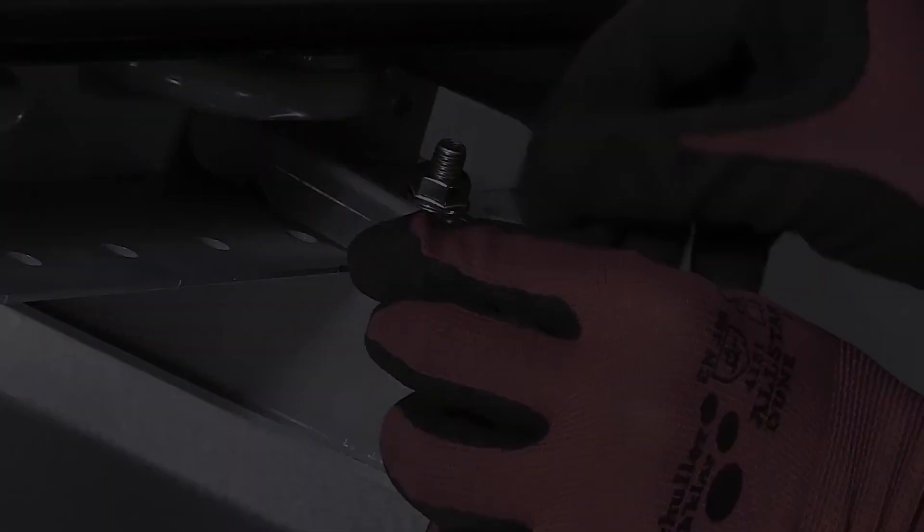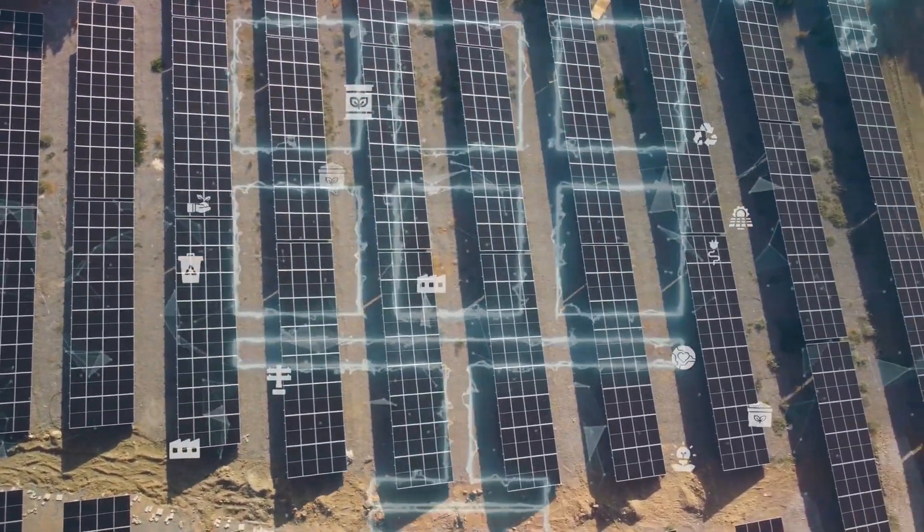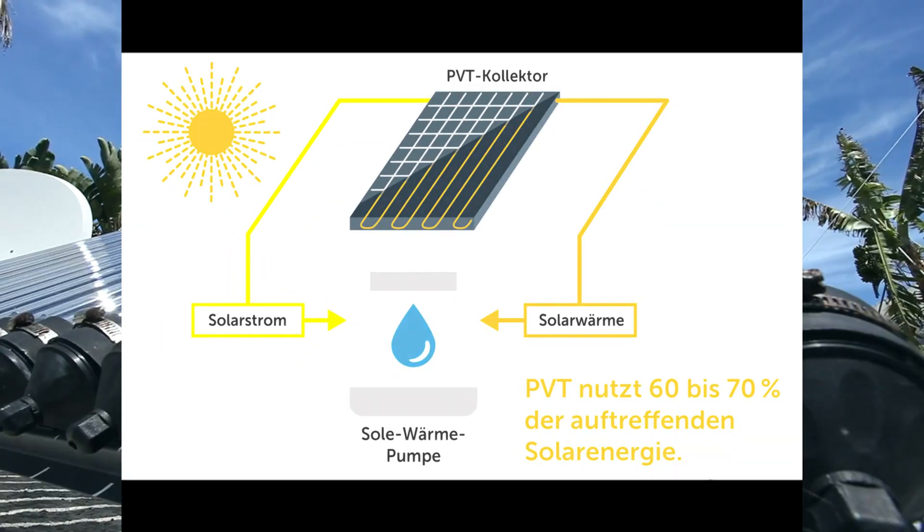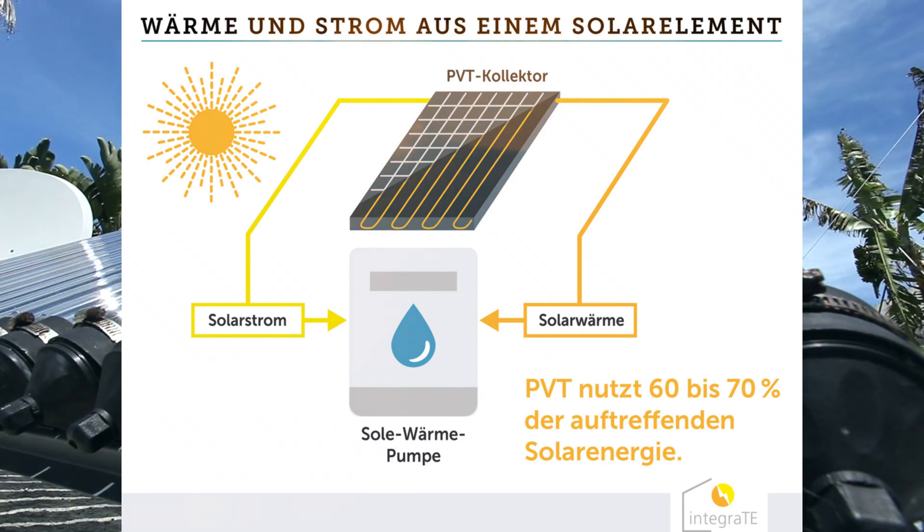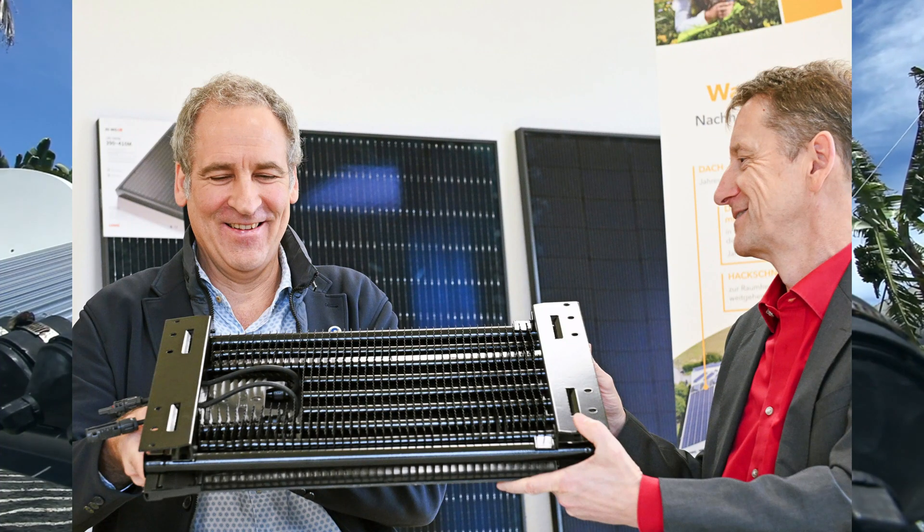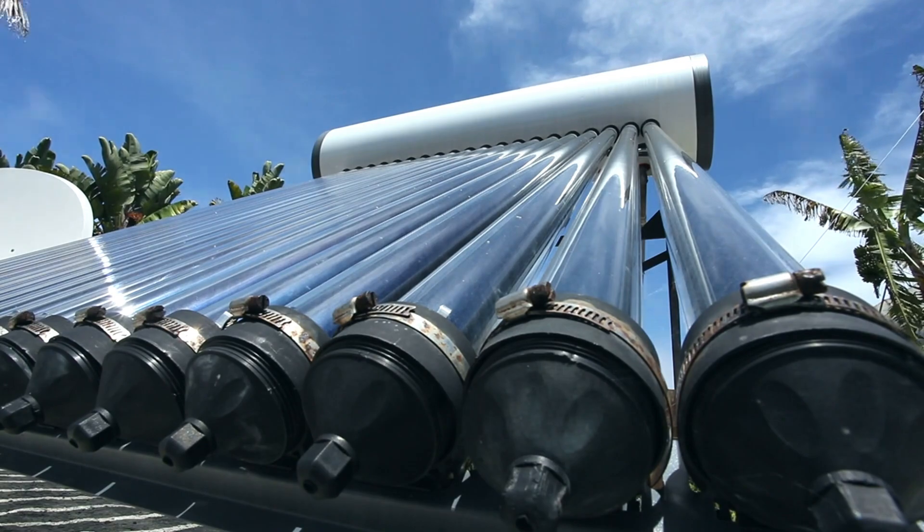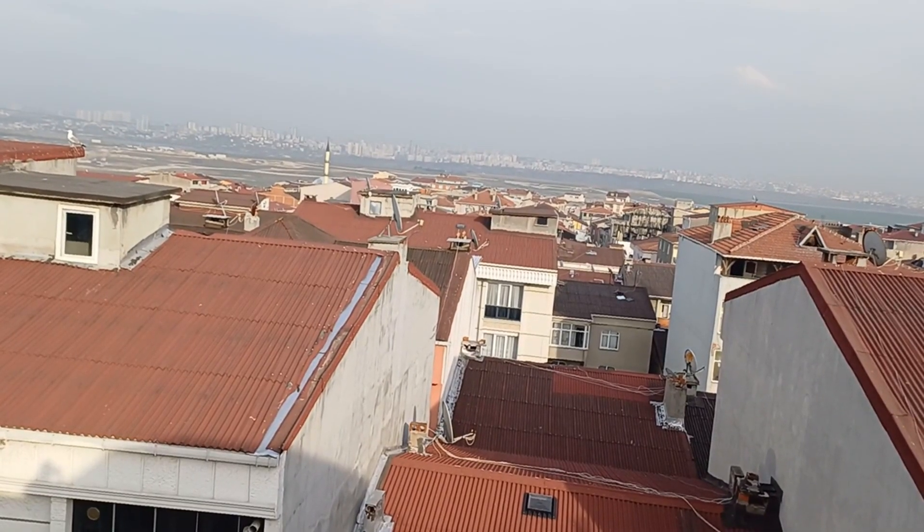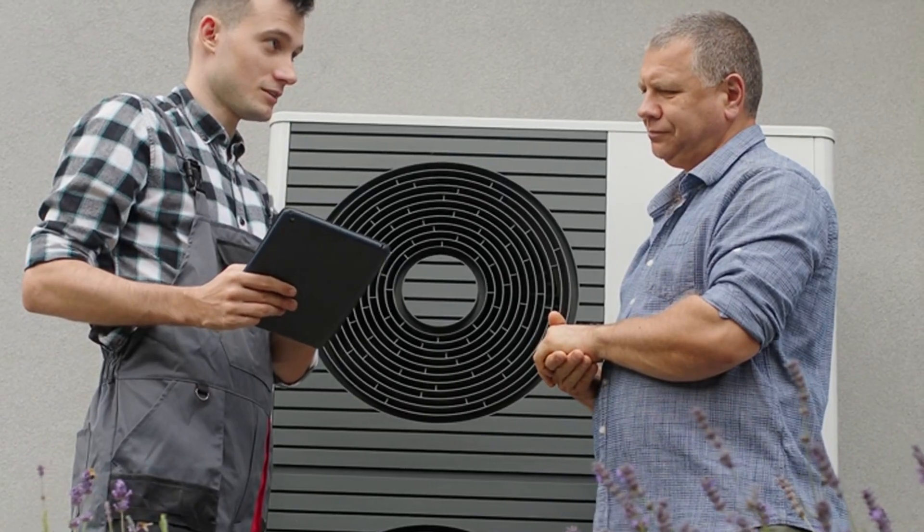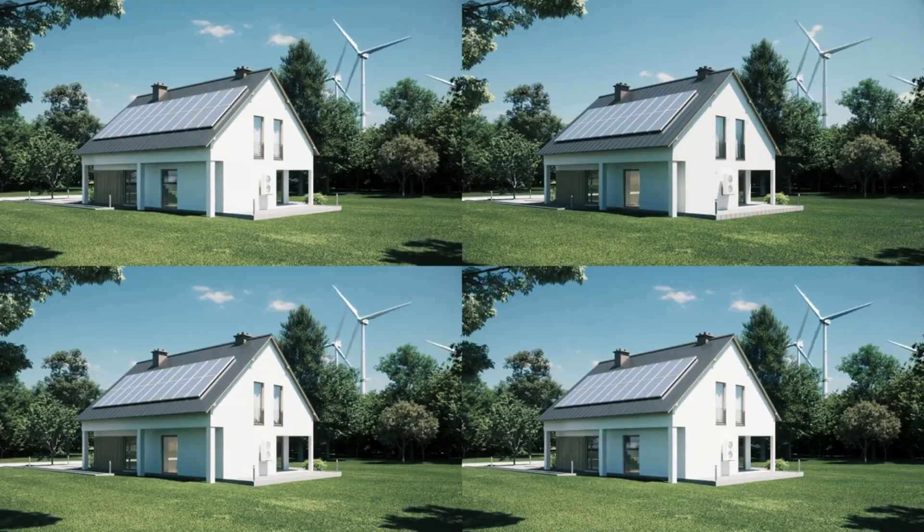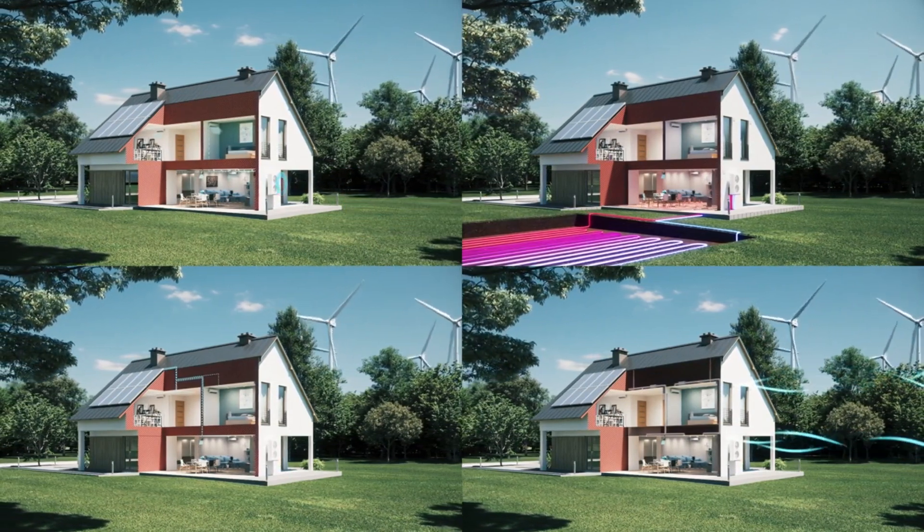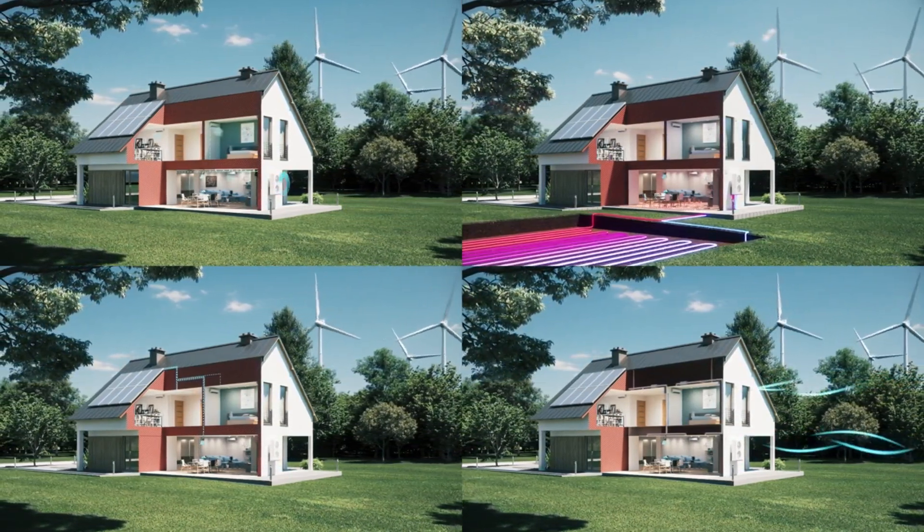Now that we understand how it works, let's talk about why it matters and where it really shines. The most obvious advantage is total energy output. Thanks to the combination of electricity and heat, Solink's systems deliver significantly more usable energy per square meter compared to standalone PV or solar thermal systems. If you have limited roof space, this hybrid approach makes every panel count. Next, there's the performance boost for the heat pump. By raising the temperature of the heat source, the system improves the heat pump's efficiency, which translates to lower energy bills and reduced carbon emissions.